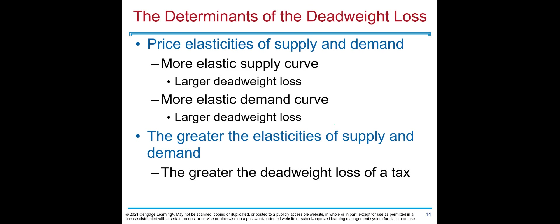The next topic is the determinants of deadweight loss. The main determinant is the price elasticity of supply and demand. If both curves are more elastic, we have more deadweight loss. When a product is elastic, both buyers and sellers are very price sensitive — any small price change causes them to consume less or produce less. When more people exit the market due to elasticity, we get larger deadweight loss. The greater the elasticity of supply and demand, the greater the deadweight loss of a tax.